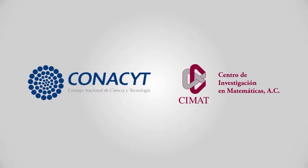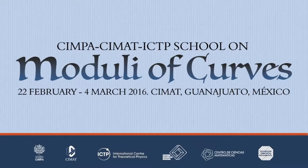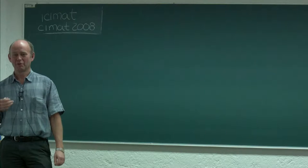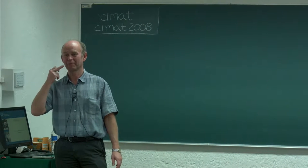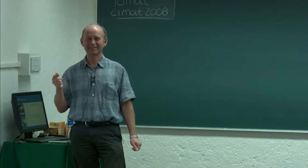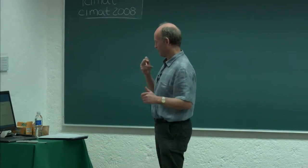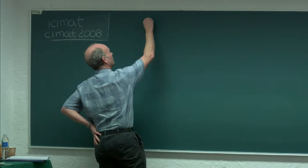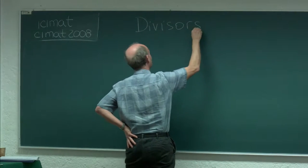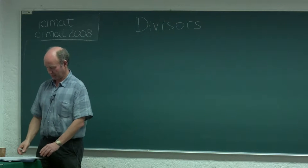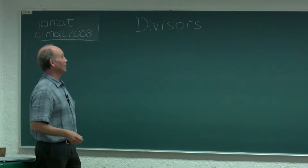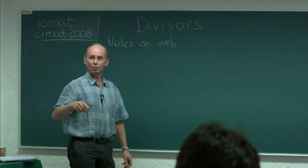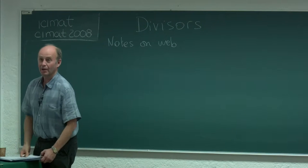I'm supposed to introduce sufficient material to explain what the minimal model program is. It has little to do with Model I, except there is at some point a moduli space. Apart from that, it's a bit disjoined from the other topics. What I want to cover today is some basic stuff about divisors. Most of what I'm going to say today is actually contained in Hartshorne's book. There are notes for my lectures on the web, on the conference page, and also on my personal web page.